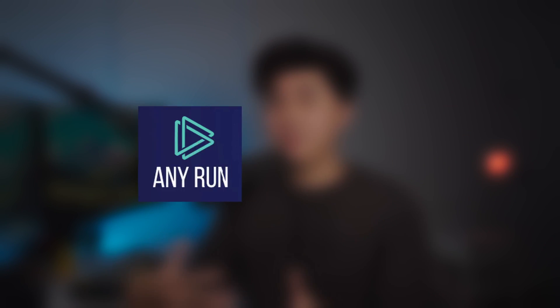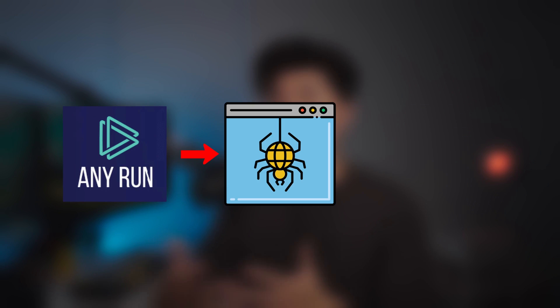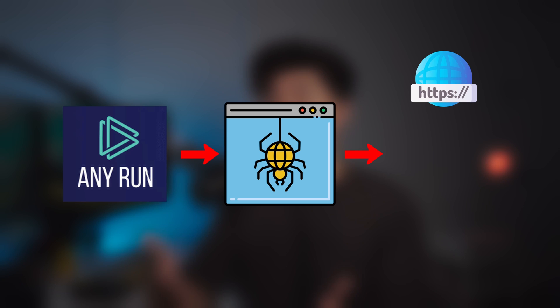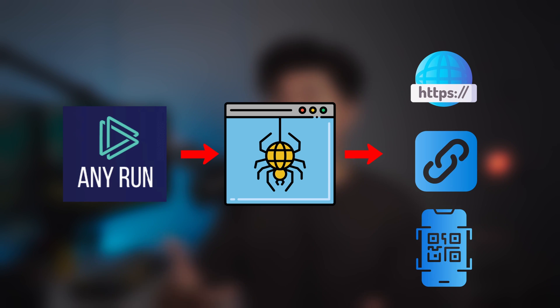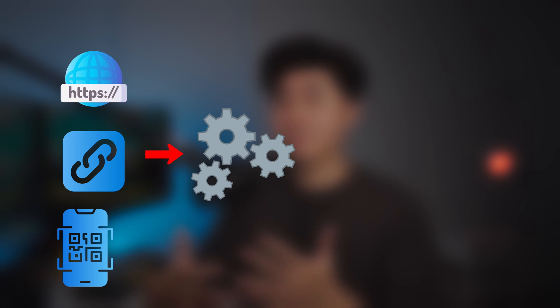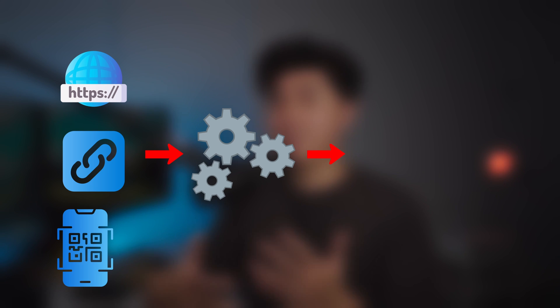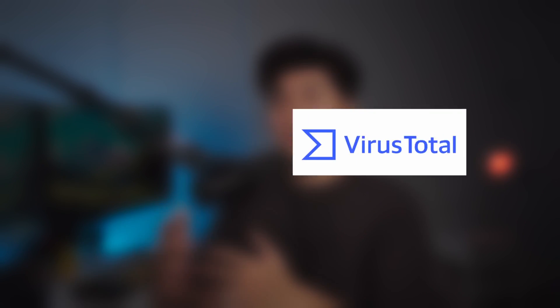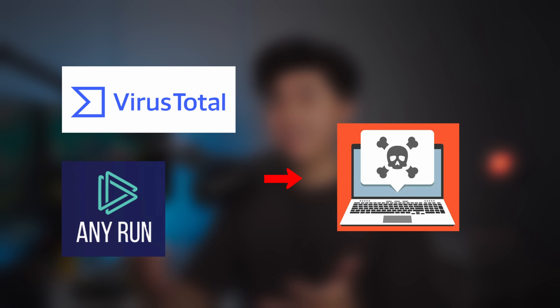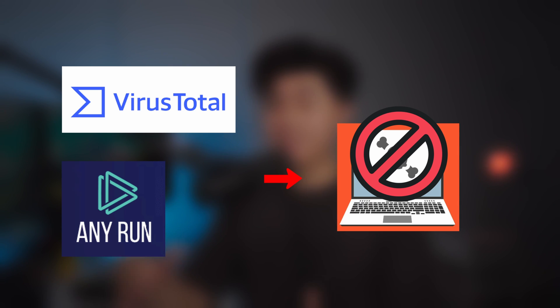For example, I've built an automation workflow for suspected phishing emails which initiates a sandbox environment so ANY.RUN can automatically perform web crawling on that email. Any websites, hyperlinks, and hidden URLs will be exposed and scanned. Once the scan is completed, the automation retrieves all the IOCs — such as the URLs and IP addresses — and runs them against another threat intelligence feed, which is VirusTotal. If all the verdicts are true positives, it automatically blocks all the IOCs.